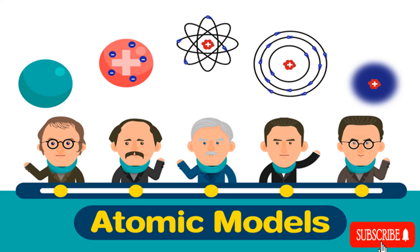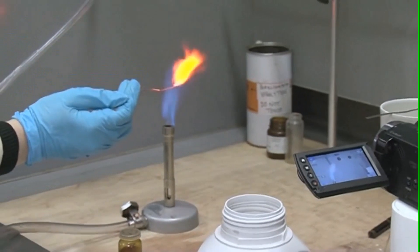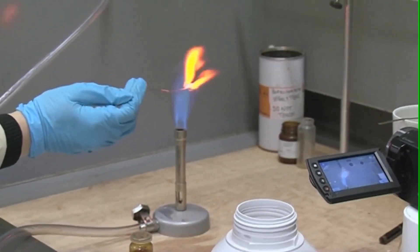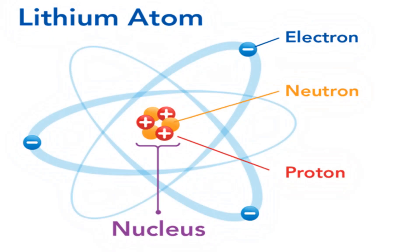Thus far, the atomic model presented has considered atoms as combinations of protons and neutrons making up a nucleus that is surrounded by electrons. Although this model has worked very well, it has outlived its usefulness because it explains only a few simple properties of atoms. It does not explain, for example, why metals or compounds of metals give off characteristic colors when heated in a flame. A more sophisticated atomic model is needed.